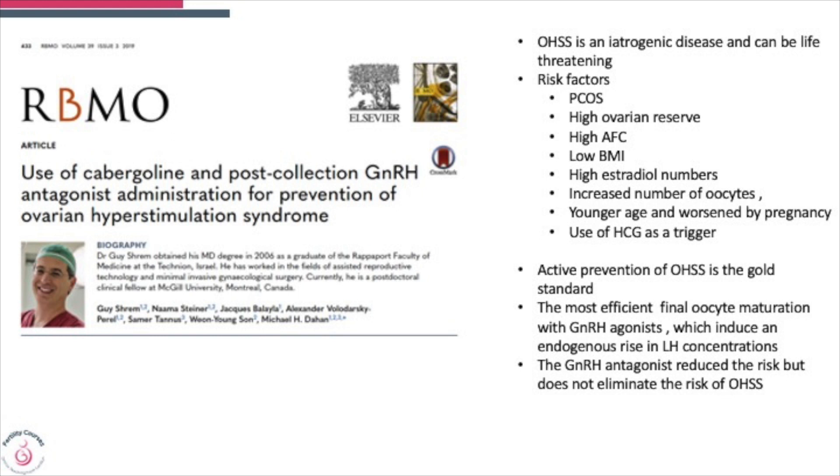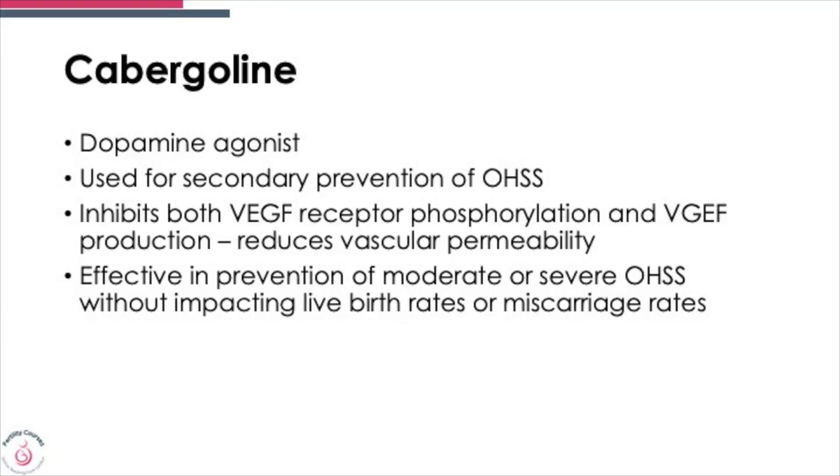Prevention of ovarian hyperstimulation is the gold standard and should be practiced. The most efficient way of final oocyte maturation is the GnRH agonist, which induces FSH and LH rise from the pituitary, and it reduces the risk of ovarian hyperstimulation significantly. Cabergoline is a dopamine agonist. It has been used for secondary prevention of ovarian hyperstimulation syndrome; in short, it reduces vascular permeability and may have played a huge role in preventing moderate and severe ovarian hyperstimulation without impacting on live birth rate or miscarriage.